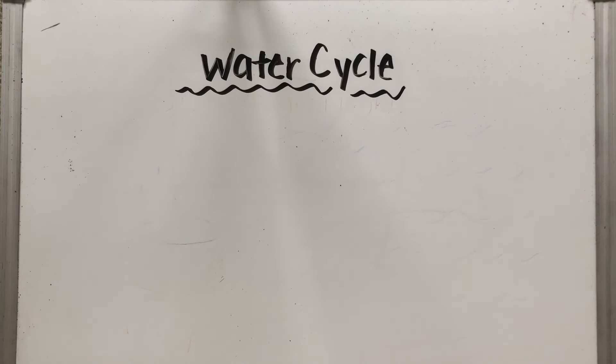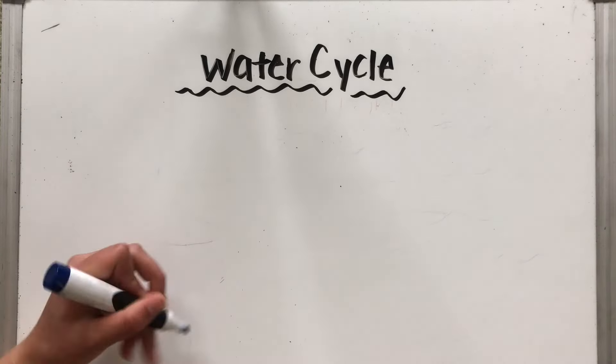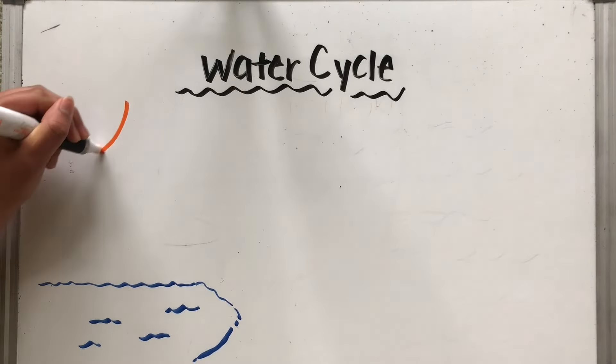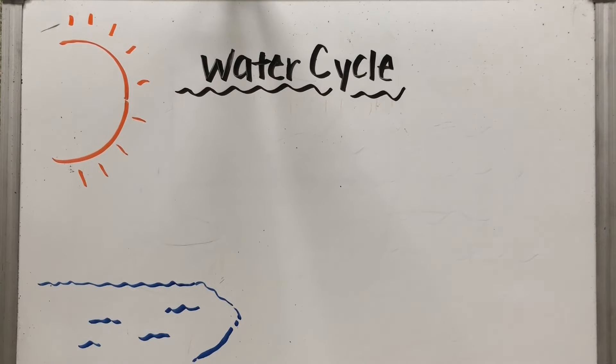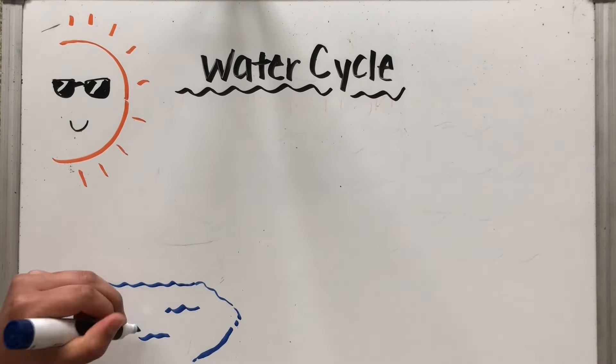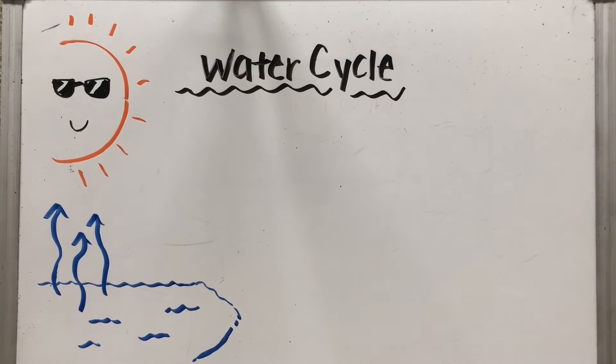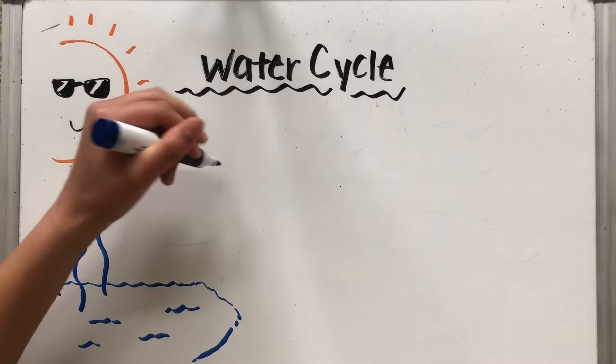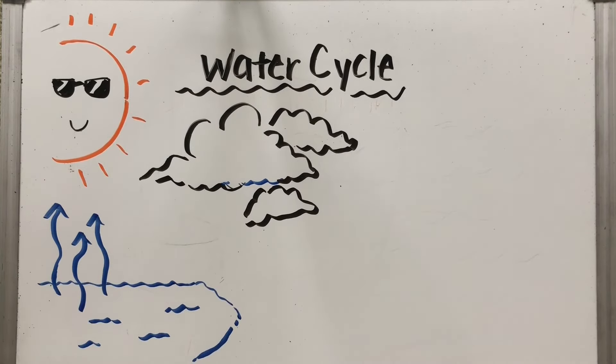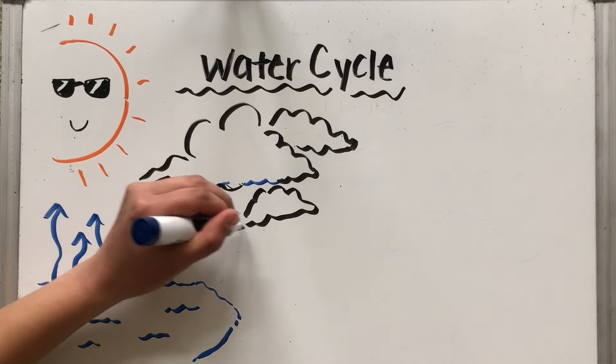Now that we've visualized all the steps of the water cycle, it's time to put them together. Let's start off with our largest body of water, the ocean, who is joined by our cool looking sun over here. The sun provides heat, thus allowing the water to evaporate into water vapor. The water vapor condenses around dust particles to form clouds. And from these clouds, rain is allowed to fall back down to the Earth in precipitation. This cycle can be repeated numerous times.